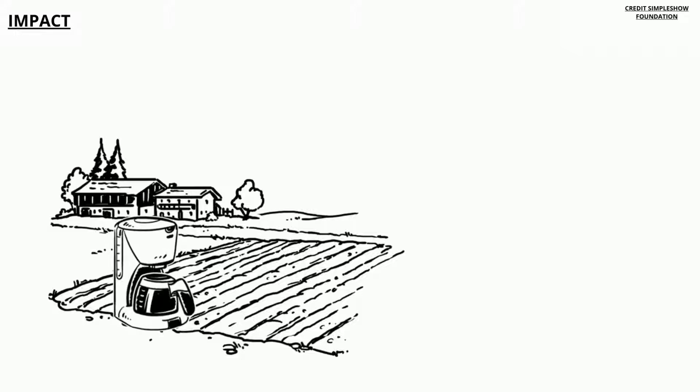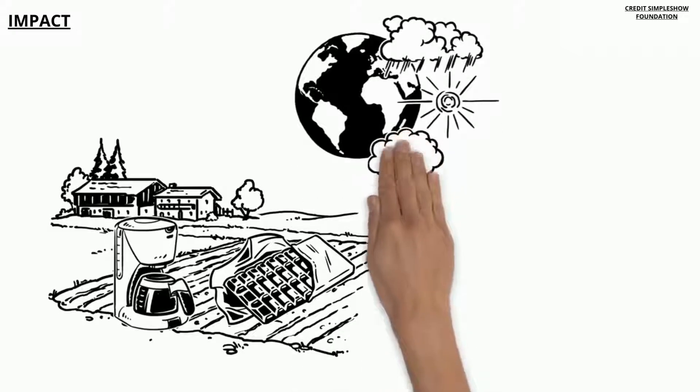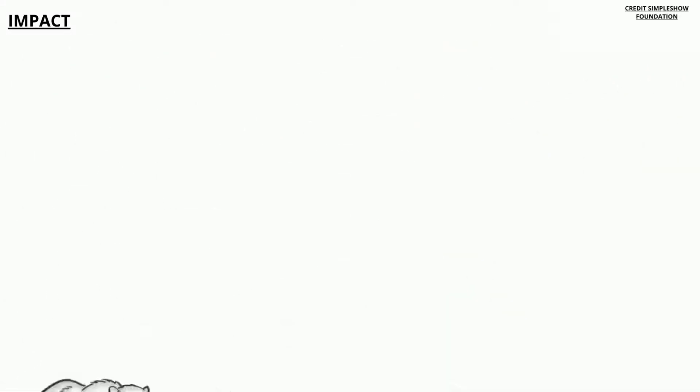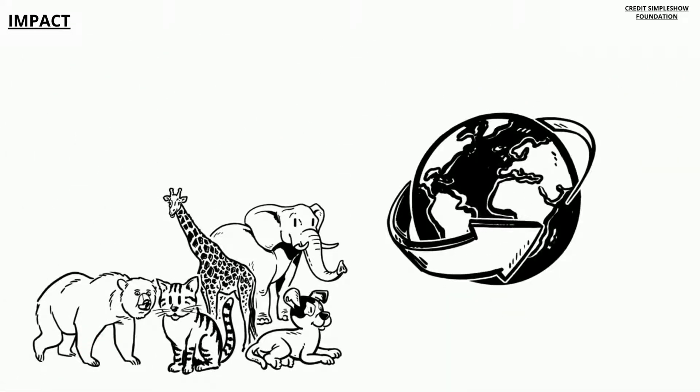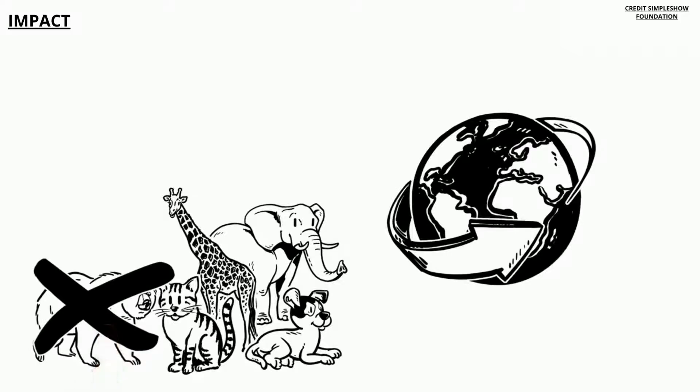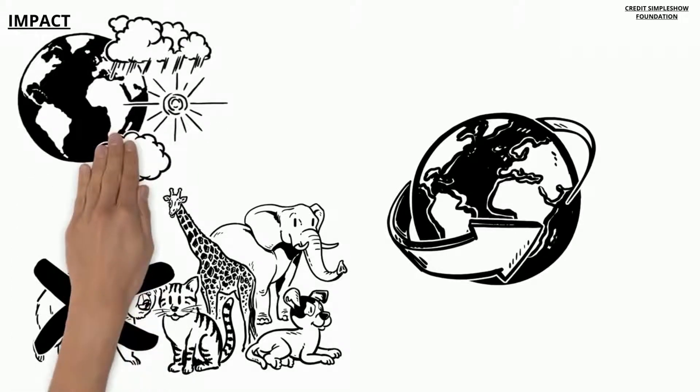Crops being used to make coffee and chocolate are affected by climate change due to the rising temperatures in the areas they grow. One in six animal species around the world can become extinct over the next century due to the effects of climate change.